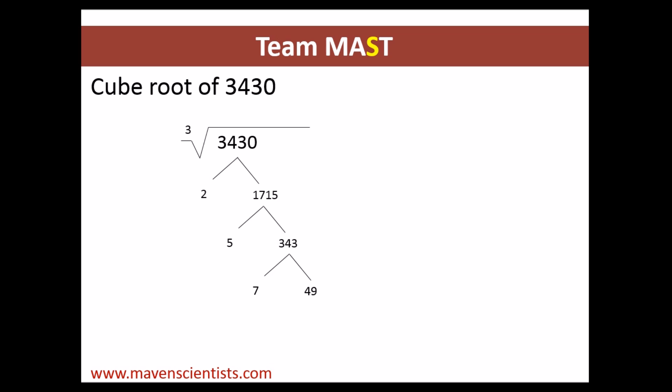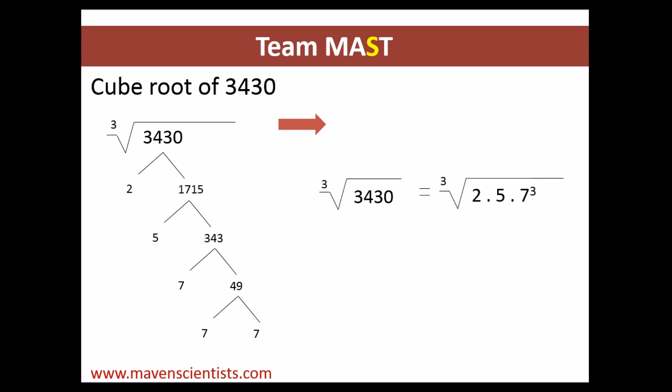We know that 49 is 7 into 7. So the factors of 3430 are 2, 5, and 7 appearing three times. The cube root of 3430 equals the cube root of 2 × 5 × 7³. We take 7 out, giving us 7 times the cube root of 2 × 5, which equals 7 times the cube root of 10.